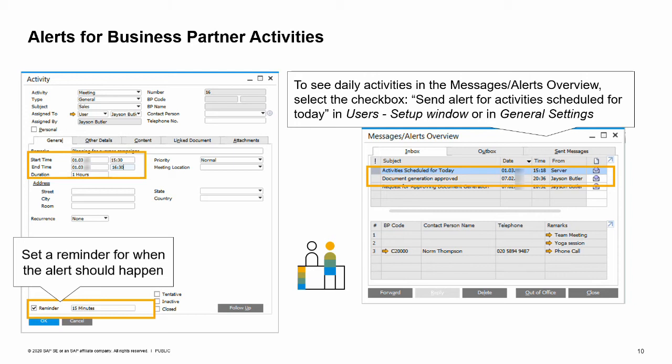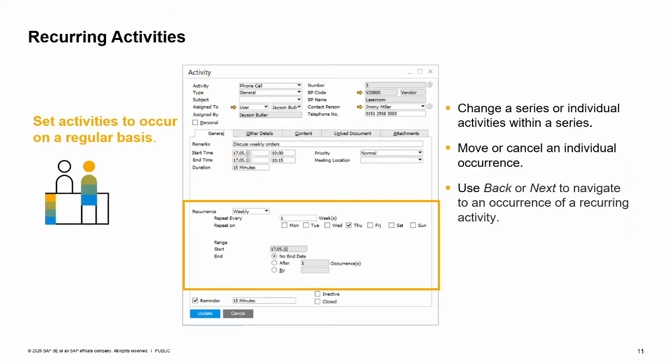The alerts for activities are controlled by the Send Alert for Activities Scheduled for Today checkbox. This setting can be set for individual users or made at the company level. When you set it in the Services tab of General Settings, a pop-up box will ask you if this setting is for all users, or if it is limited to new users and users who follow the company's default settings. The date used for the alert is the date you set on the activity. Activities can be set to occur on a regular basis — for example, a weekly meeting. You can manage changes to a series or to individual activities within a series, and each individual occurrence can be moved or canceled without affecting the series.